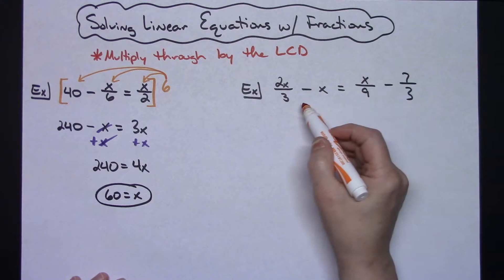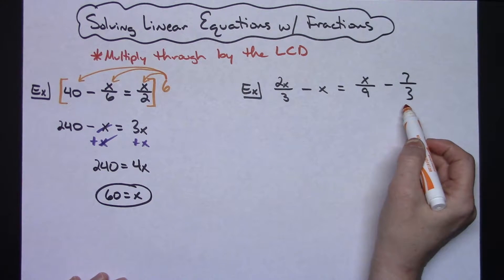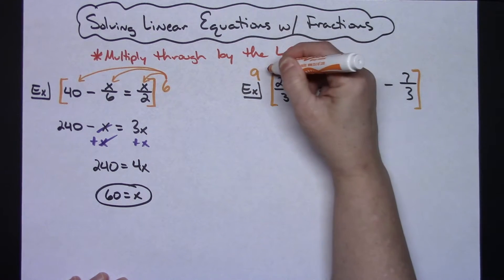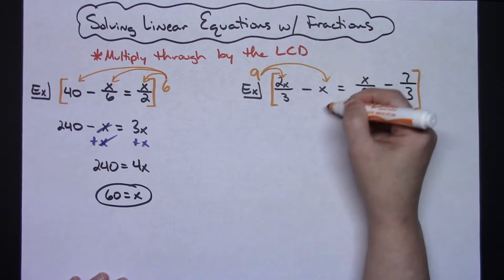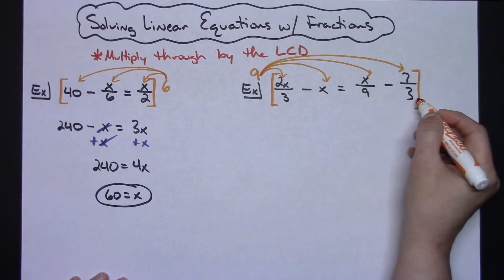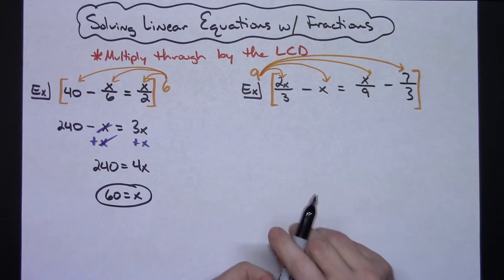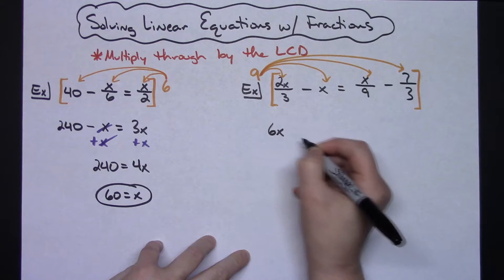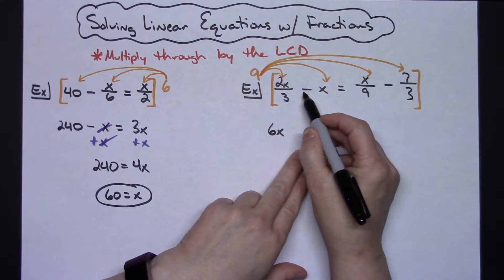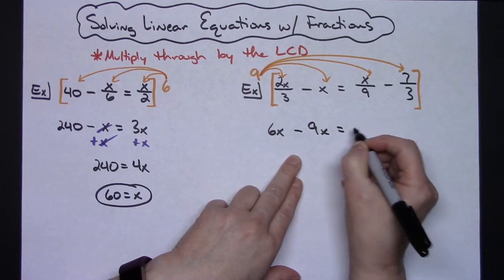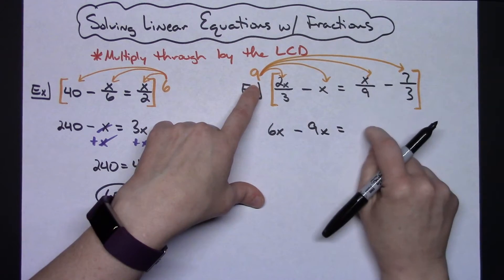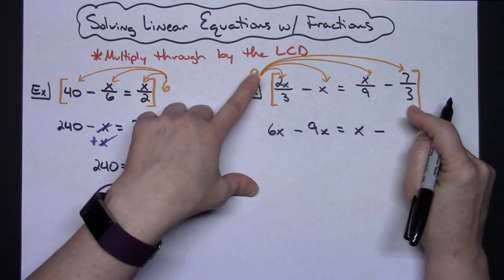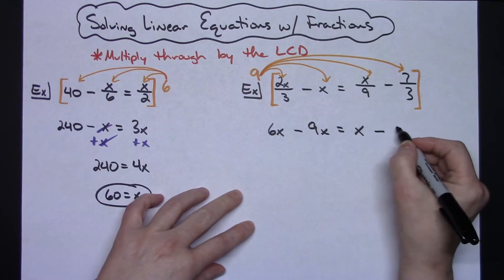Looking at the second problem, I've got denominators of 3, 9, and 3, so the least common denominator is 9. I'm going to multiply the entire equation by 9, distributing it to every term. That means four distributive steps. For the first term: 9 divided by 3 is 3, times 2x, gives 6x — the fraction goes away. The next term has no fraction, so 9 times negative x is just negative 9x. Then 9 divided by 9 leaves just x. For the last term: 9 divided by 3 is 3, times 7, gives 21.